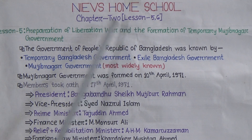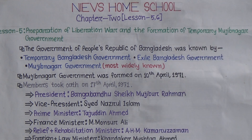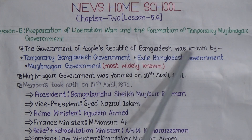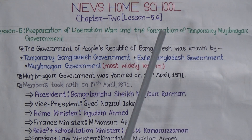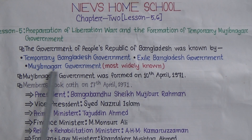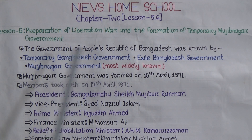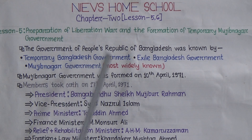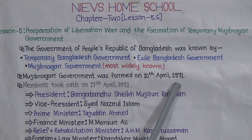We are going to start with Lesson 5, named 'Preparation of Liberation War and the Formation of Temporary Mojibnagar Government.' The government of the People's Republic of Bangladesh was known as the temporary Bangladesh government, exiled Bangladesh government, and most widely known as Mojibnagar Government. Mojibnagar Government was formed on 10th April 1971.